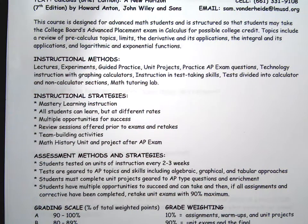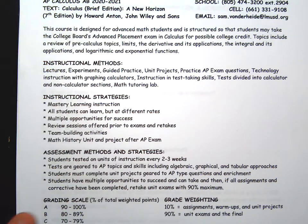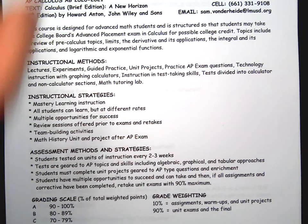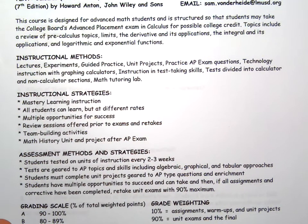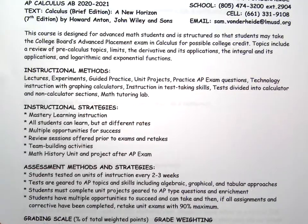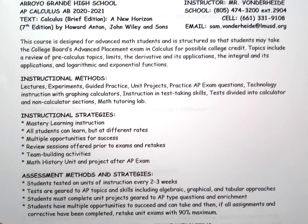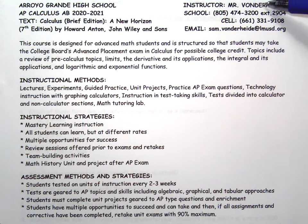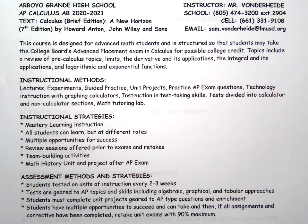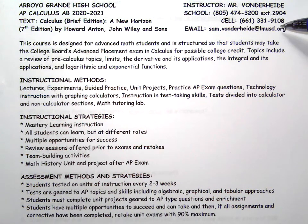I'm going to go over the syllabus. At the top here is my name, my school phone number extension, which I rarely check voicemails — but you can try and call it if I'm there. This is my cell phone; you can call or text. And this is my school email, which we use for communications.